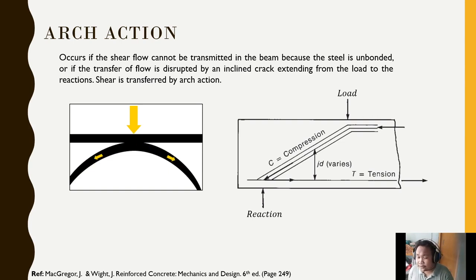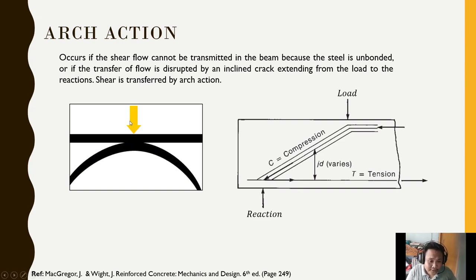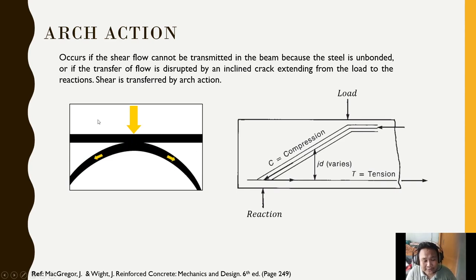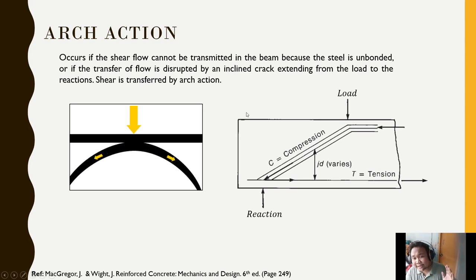I showed arc action here, not beam action. What is the difference? Arc action is when the load is close enough to the reaction that it can transfer directly — like an arch. Unlike beam action where the load transfers through the fibers before reaching the reaction, in arc action the load is focused near the reaction. As you can see in the figure, the load transfers as compression toward the support — like an arc.